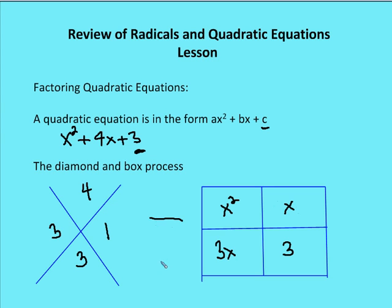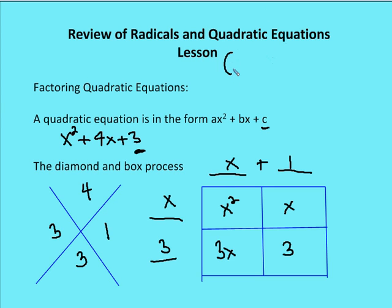We place hash marks on the outside of the box and identify common factors in the rows and columns. The common factor in the first column is x, and in the second column is 1. The common factor in the first row is x, and in the second row is 3. So the quadratic factors as (x + 1)(x + 3).